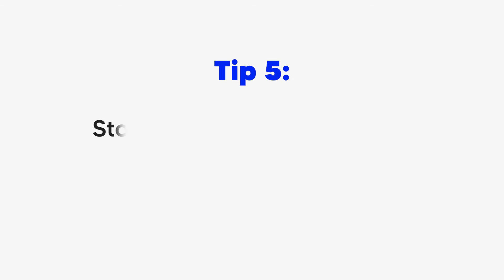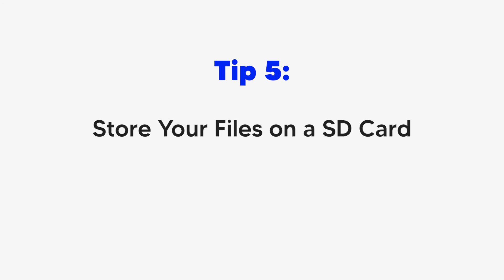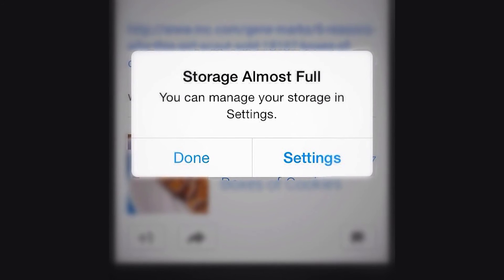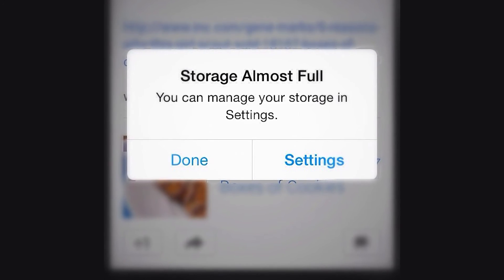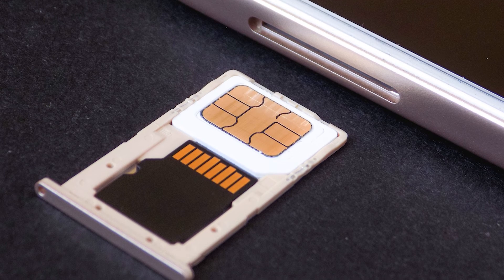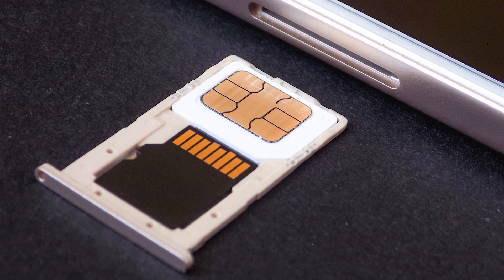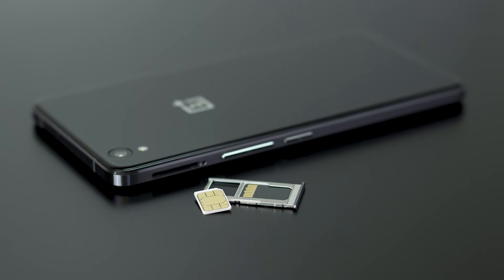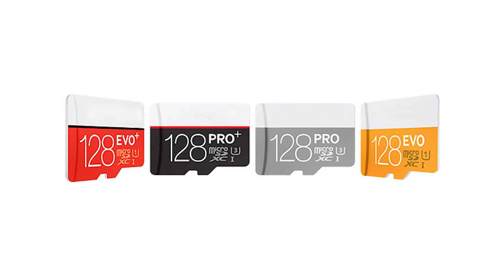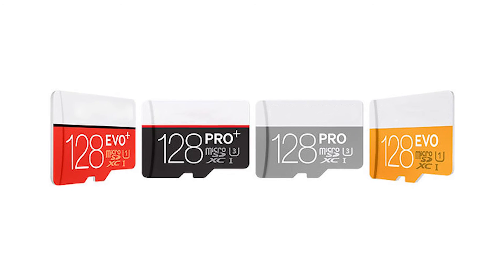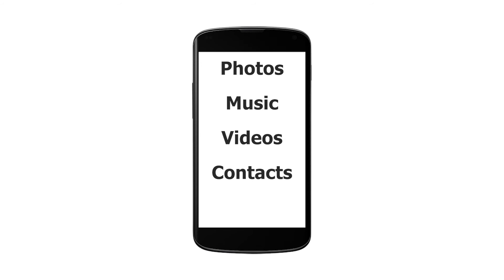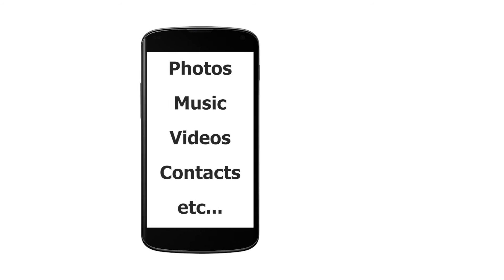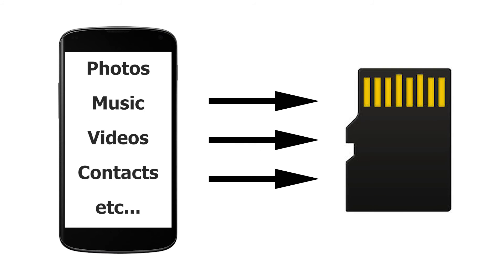If your phone has 32 or 64 GB of storage, it will soon run out of space. In that case, you can consider using an SD card to expand its storage. Most Android devices have an SD card slot. You can get a 128 GB SD card and connect it to your device, then move your photos, music, videos, contacts, etc. from the device's internal storage to the SD card.